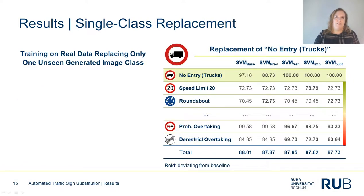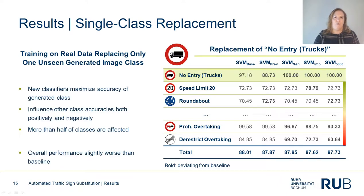The second set of experiments deals with the replacement of a single class only. Using the second type of CycleGAN, we generated samples of an unseen traffic sign class. Apart from this traffic sign class, each dataset comprises real-world images. The table shows results for the replacement of the no-entry-for-truck sign; the highlighted row denotes the replaced class. Other table rows refer to the most significant positive and negative changes with respect to the baseline classifier, where bold entries highlight deviating accuracies. We can see that all new classifiers maximize the accuracy of the generated class, but other class accuracies are influenced as well — in this case, more than half of the dataset classes are affected by the replacement. While changes to other classes can be both positive and negative, most differences are of minor importance.